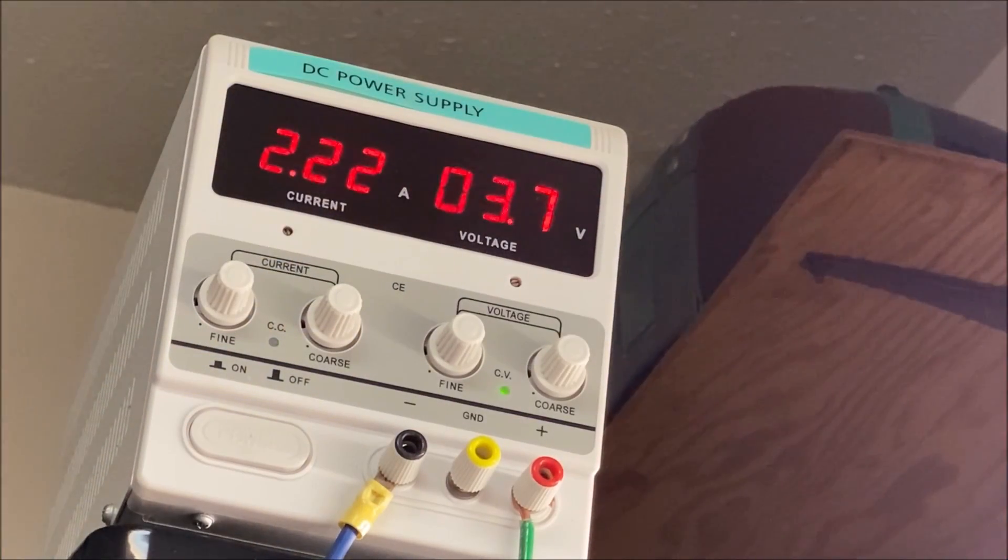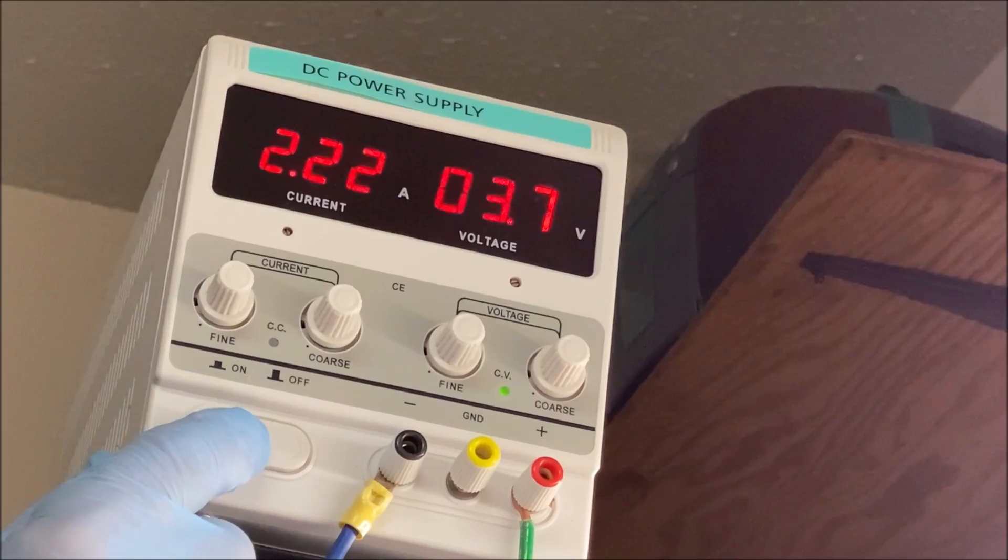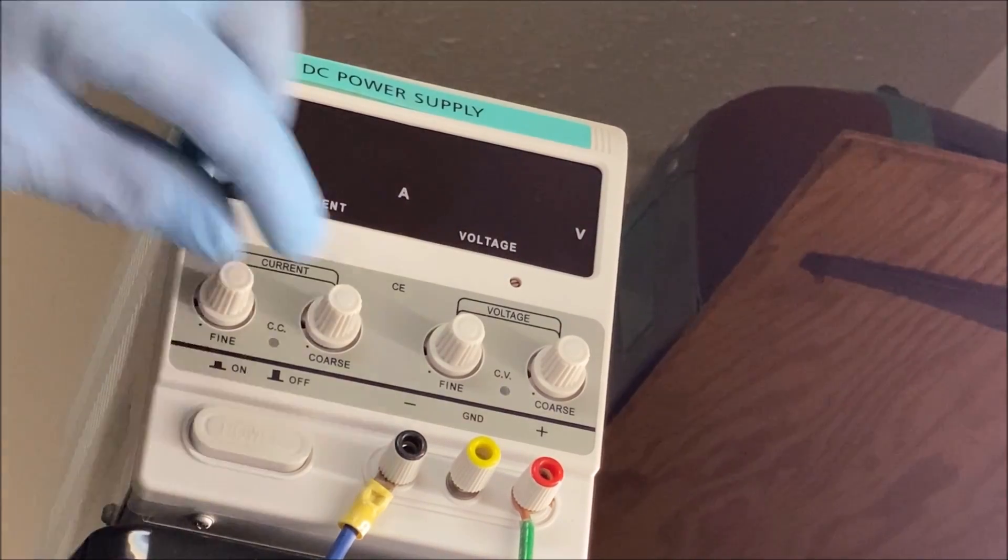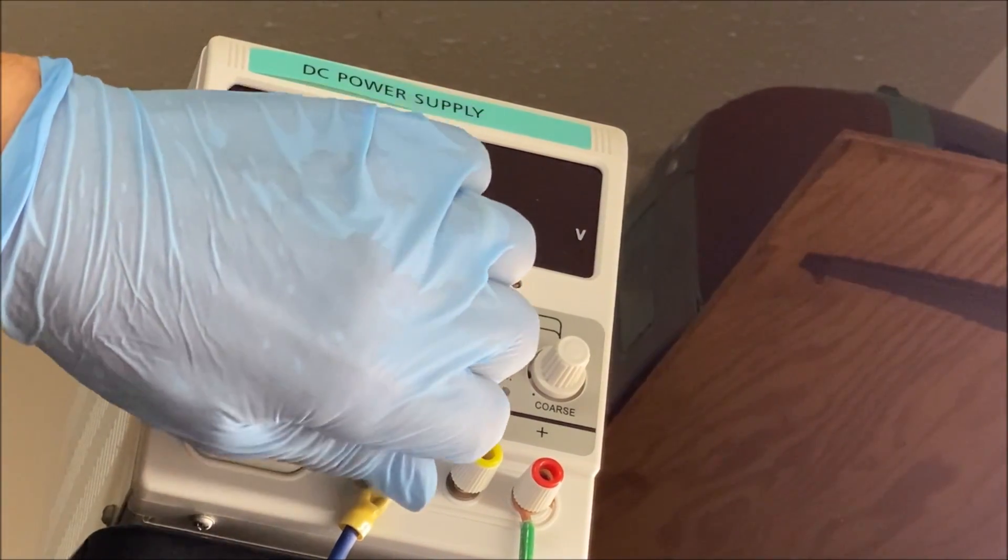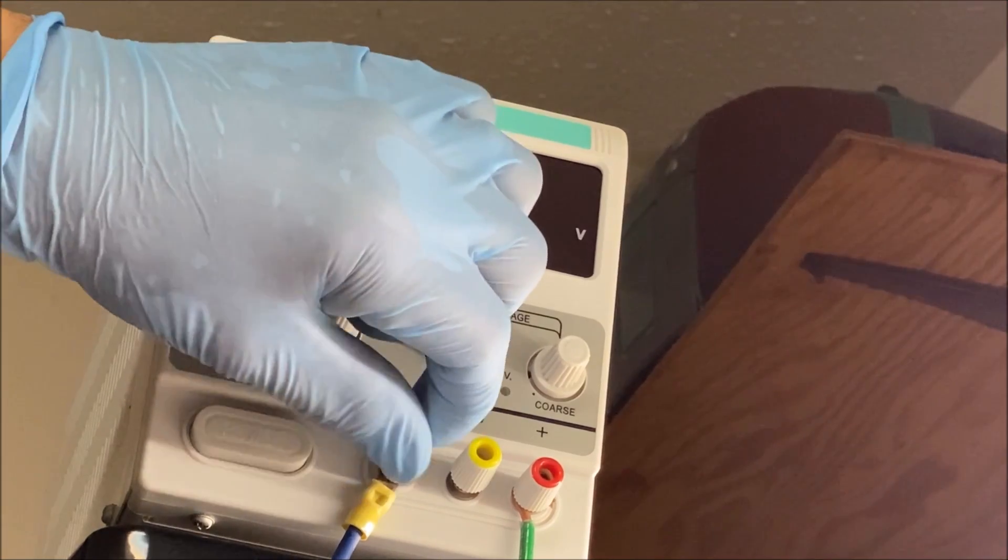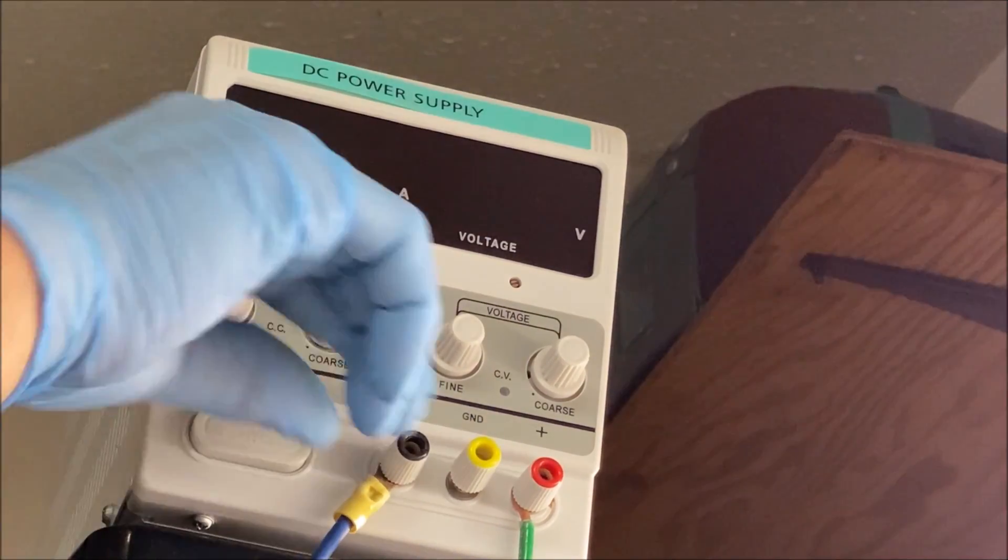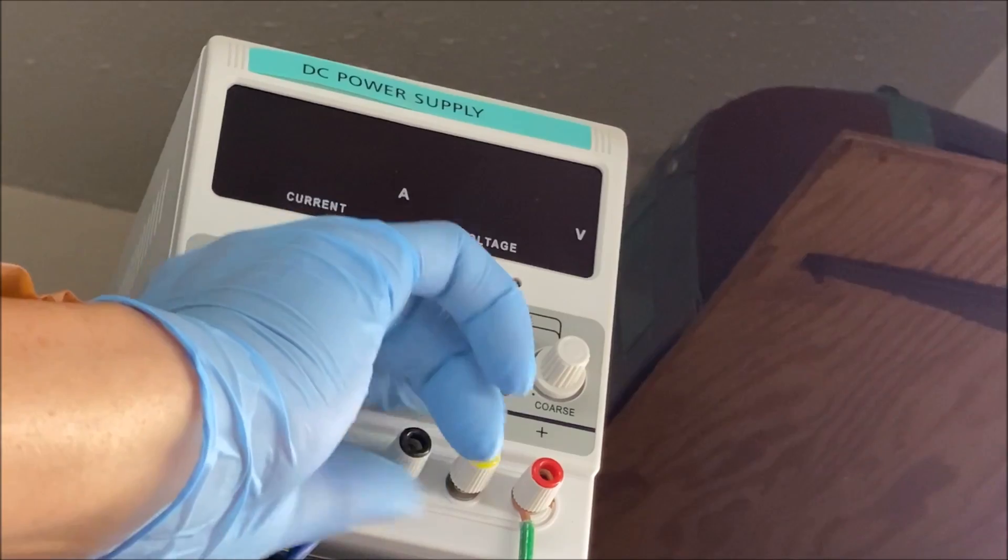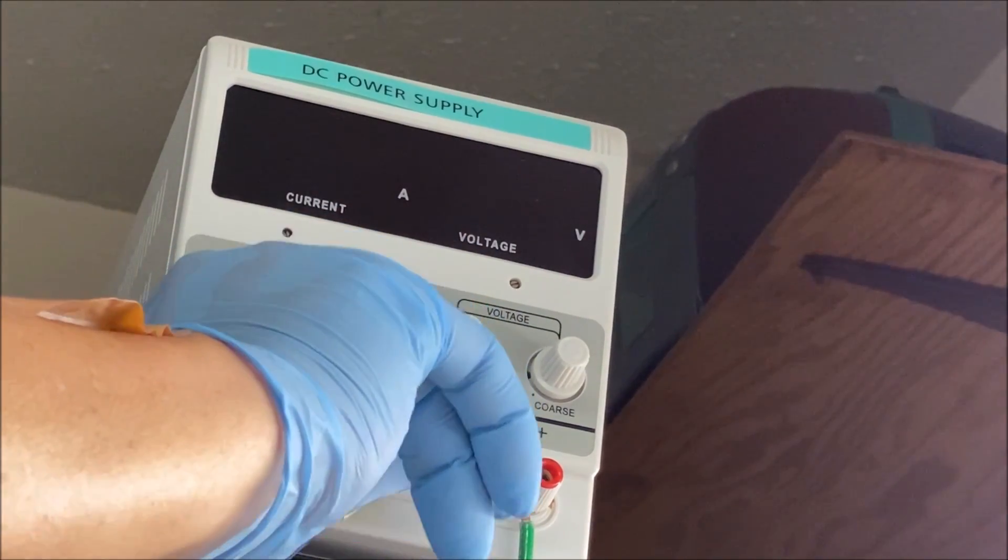All right, to do the reconfiguration modification, turn the power supply off. I'm disconnecting the negative side lead that goes down to the silver cell. Just take that right off.